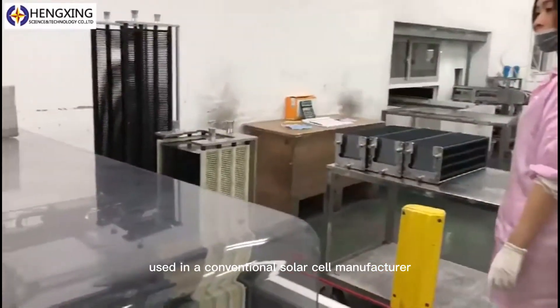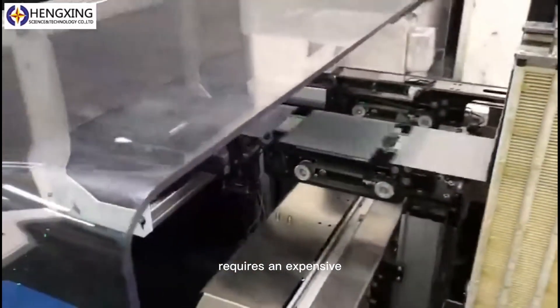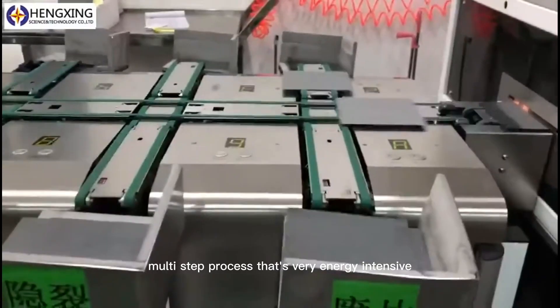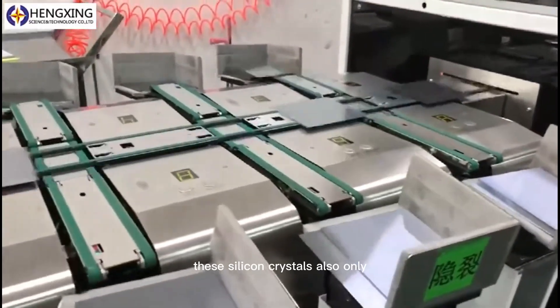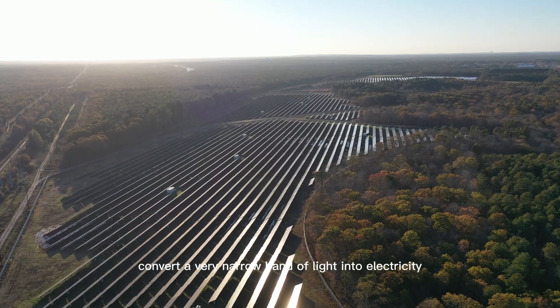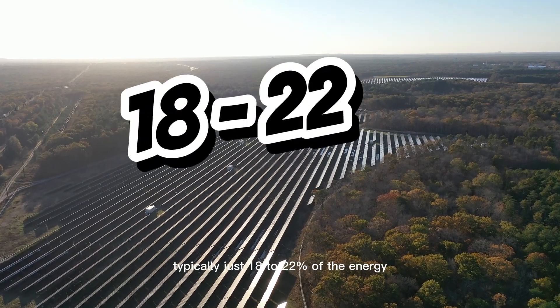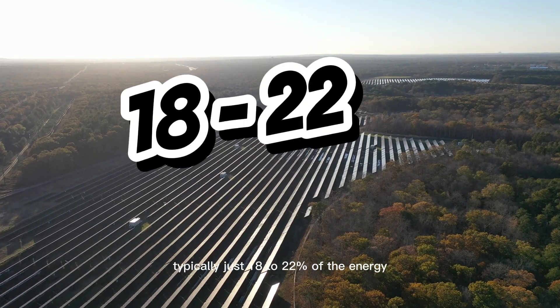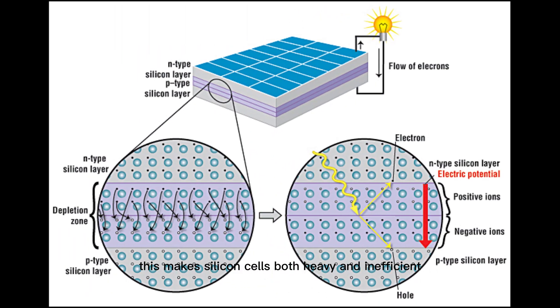The silicon used in a conventional solar cell requires an expensive, multi-step process that's very energy-intensive to grow a perfect defect-free silicon crystal. These silicon crystals also only convert a very narrow band of light into electricity, typically just 18 to 22% of the energy from sunlight. This makes silicon cells both heavy and inefficient.